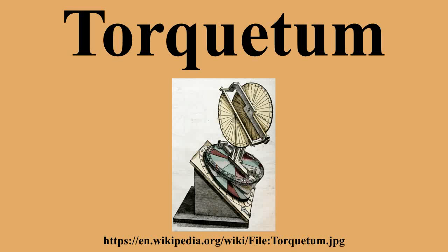The Torquetum is a medieval astronomical instrument designed to take and convert measurements made in three sets of coordinates: horizon, equatorial, and ecliptic.